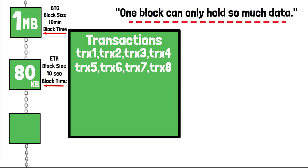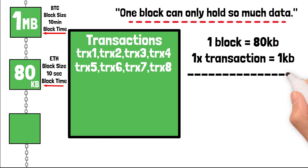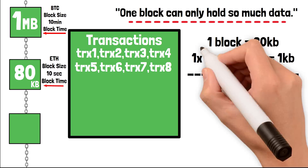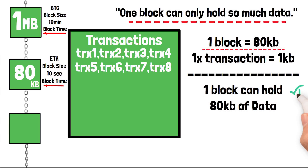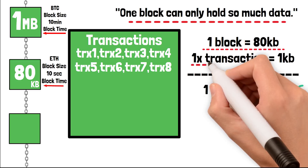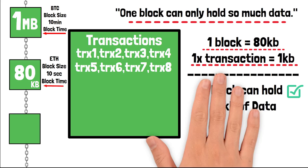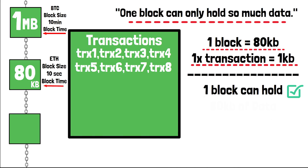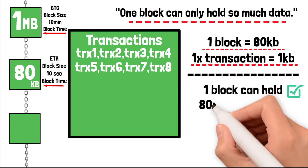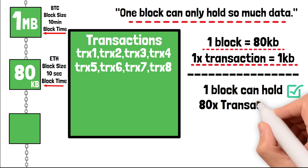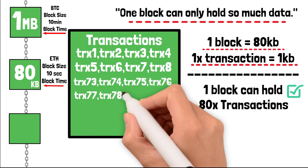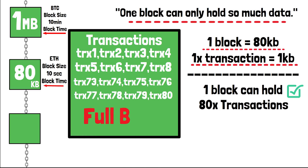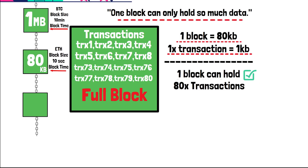Over a 10-minute period, Ethereum produces roughly 60 blocks and the total size of all those blocks is about 4 megabytes worth of data. For example, if the Ethereum blockchain mines one block every 10 seconds and each block is 80 KB, and the average size of every transaction is 1 KB, then each Ethereum block could only hold up to 80 transactions tops.